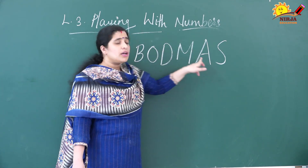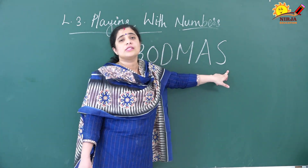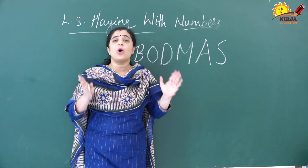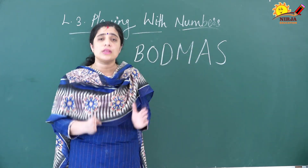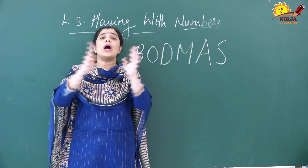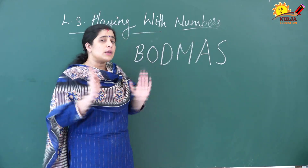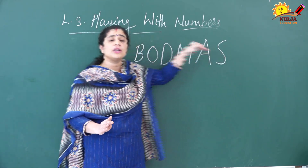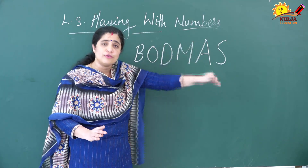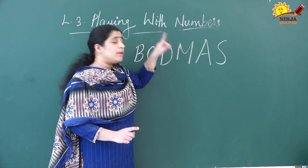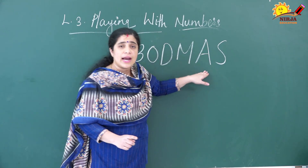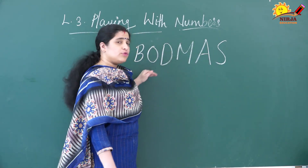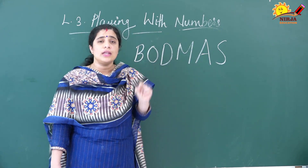That means you first have to open all the brackets. If brackets are not there, you follow the order: Division, then Multiplication, then Addition, and last Subtraction. So that is the order you have to follow to solve a problem in which all four operations are present.